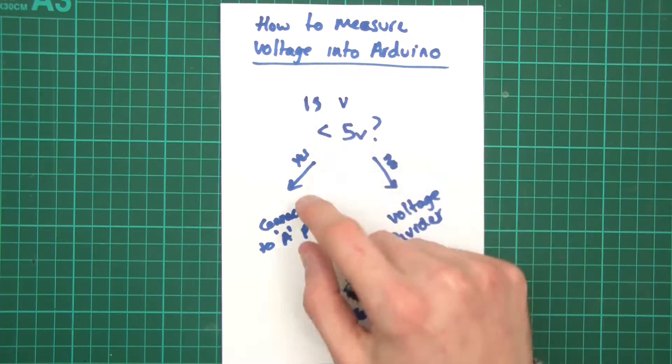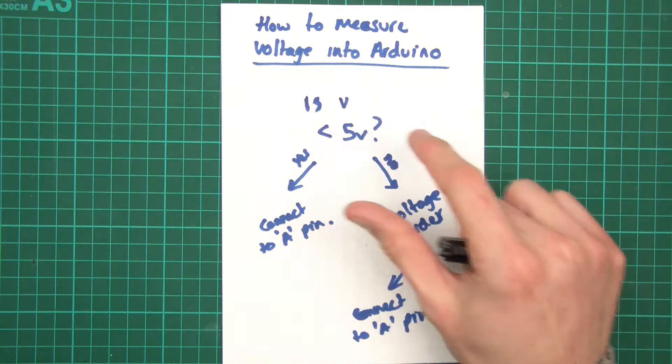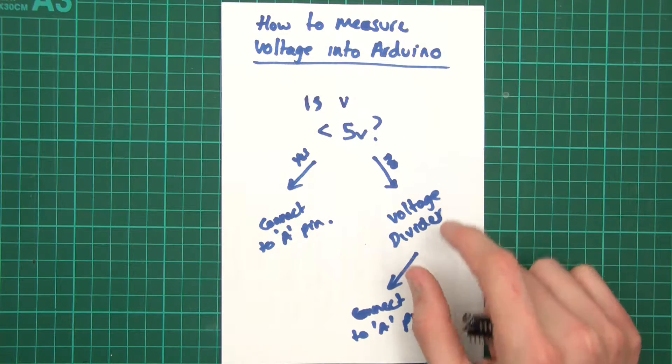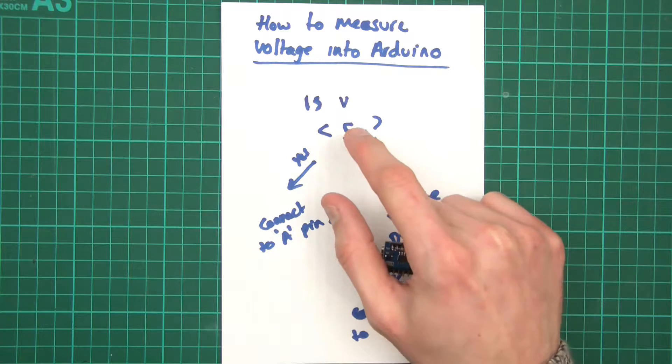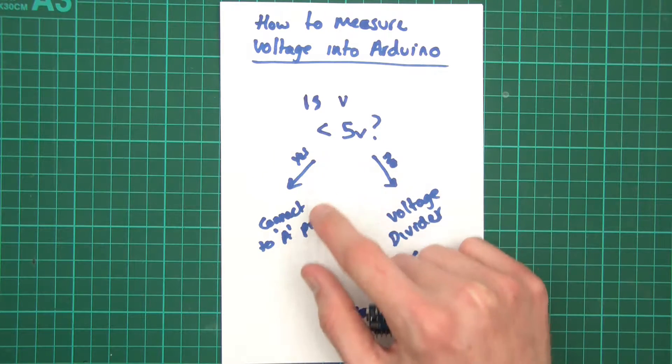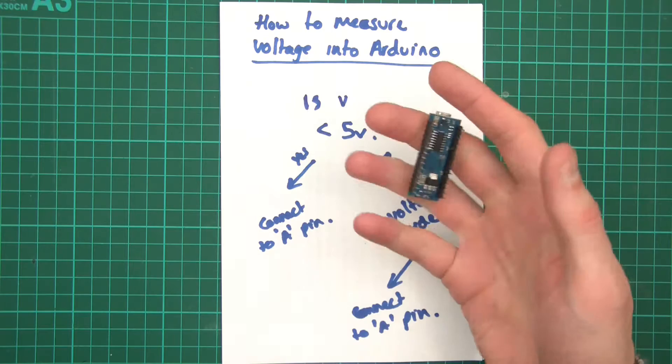Hi everyone, last week or the week before, or whenever it was, I did a video on how to measure voltage into the Arduino, and I did this little diagram thing here, flowchart, I said, is it less than 5 volts? Yes, then connect to the analog pin, and then I went through the programming and stuff.